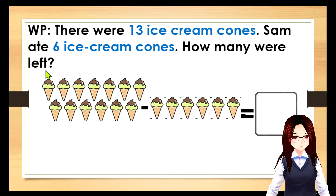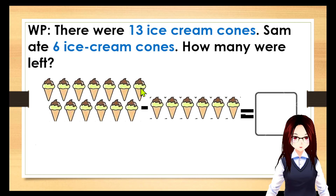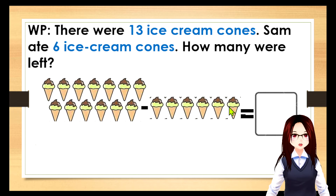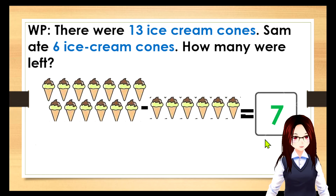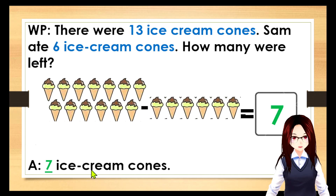So, again, here you have one, two, three, four, five, six, seven, eight, nine, ten, eleven, twelve, thirteen ice cream cones. Minus one, two, three, four, five, six ice cream cones. Equal... seven. Thirteen minus six equals seven. So, the answer is seven ice cream cones.